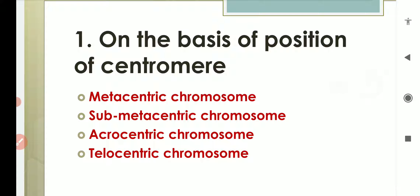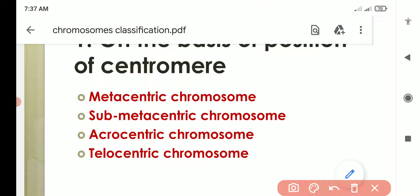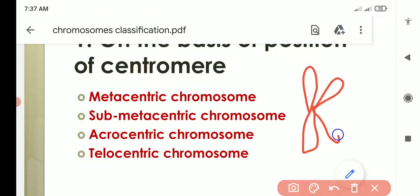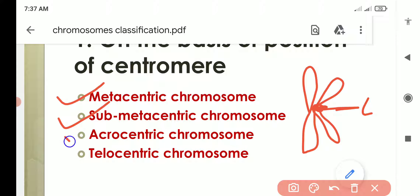We can classify chromosomes firstly on the basis of position of centromere. As we discussed in the last video, each chromosome has an essential part known as centromere, also known as primary constriction. Based on the position of this centromere, we can classify chromosomes into four different types: metacentric chromosome, submetacentric chromosome, acrocentric chromosome, and telocentric chromosome.